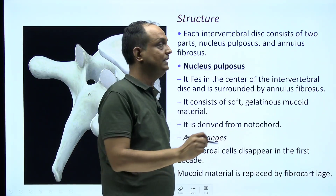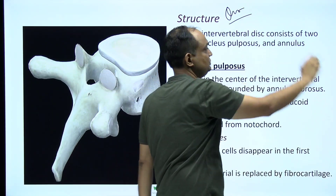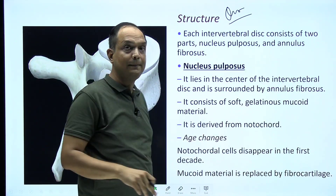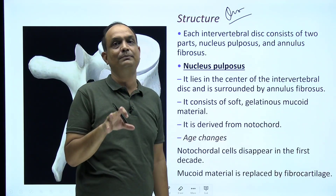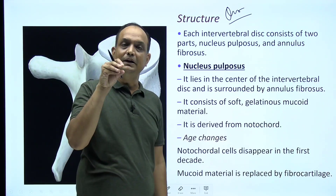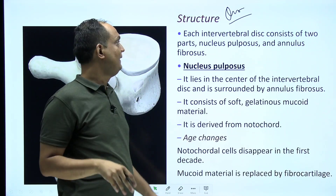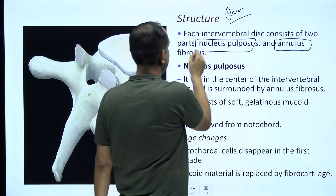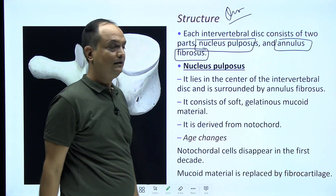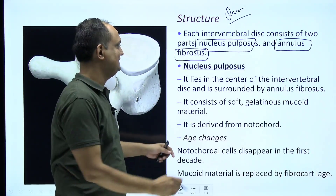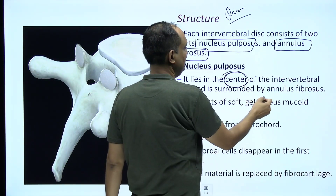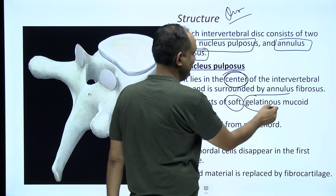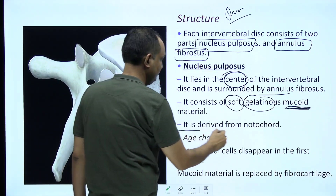The intervertebral disc has two components. The peripheral part is the annulus fibrosus, which is a ring-shaped structure. The middle portion is the nucleus pulposus. The nucleus pulposus lies in the center of the disc and is surrounded by the annulus fibrosus.